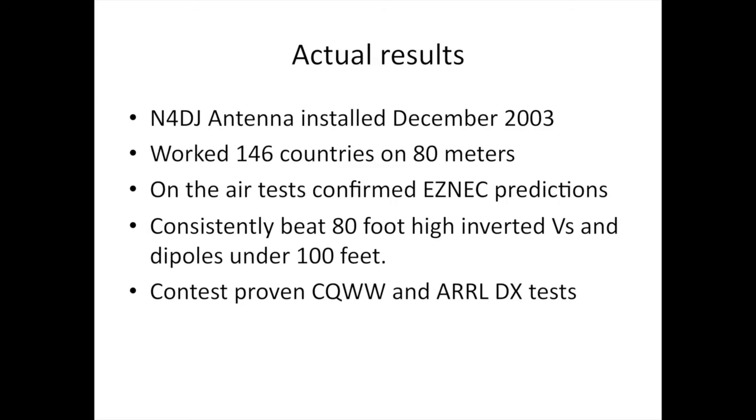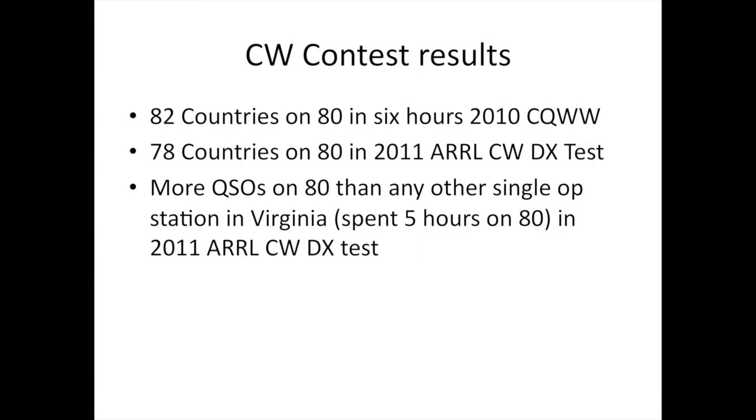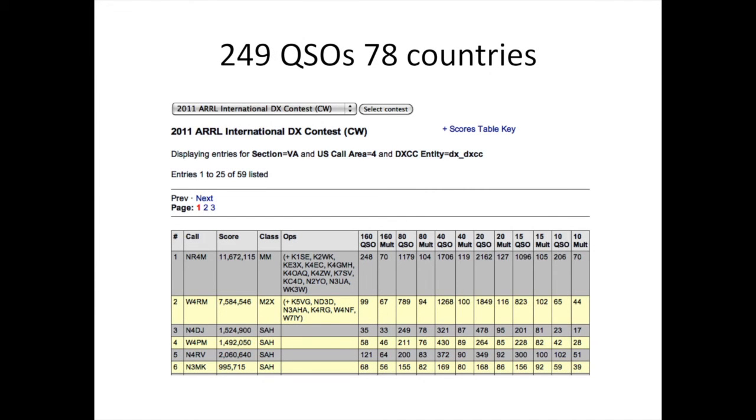I worked 82 countries on 80 meters in six hours in the 2010 CQ Worldwide DX contest. I worked 78 countries on 80 meters in the 2011 ARRL DX contest. I had more QSOs on 80 than any other single op station in Virginia. And I only spent five hours on 80 meters in the 2011 ARRL CW DX contest. That shows the antenna worked really, really well. This is a clip out of the ARRL database for the 2011 contest showing the countries worked on 80 meters in the QSOs.